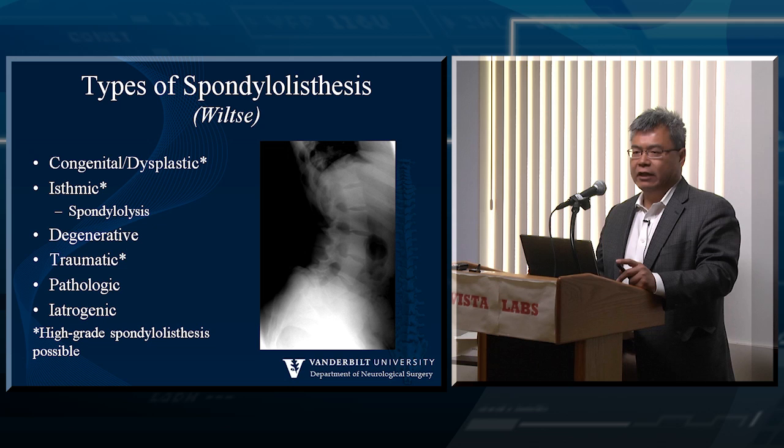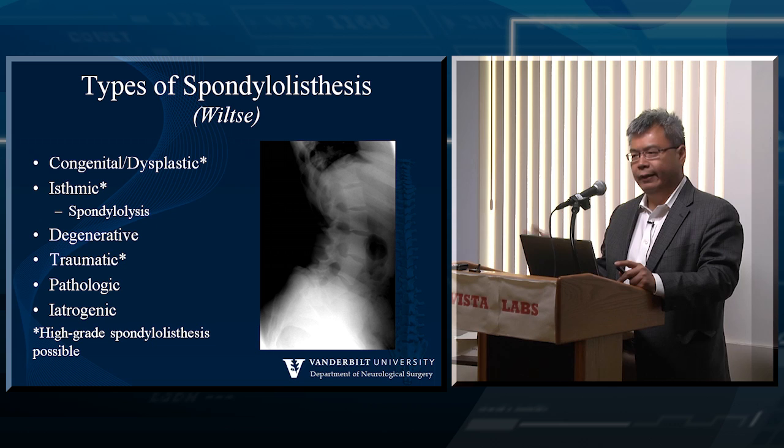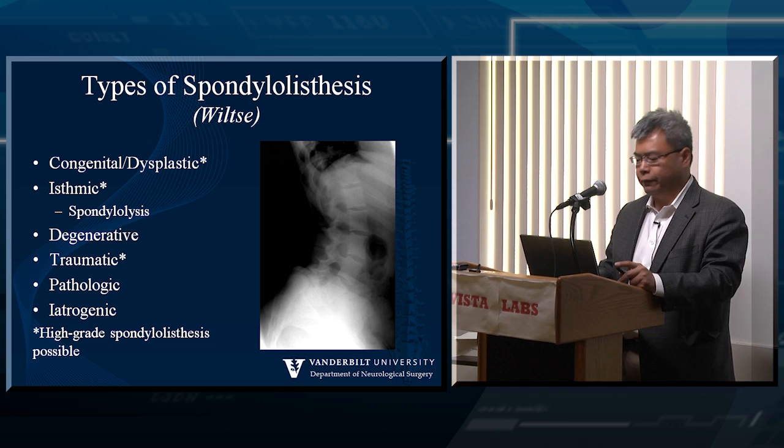That's why people with degenerative spondylolisthesis with the elongated PARS rarely progress past a grade 2. It's one of those things where you really don't need to intervene as quickly as you would for some of these others.